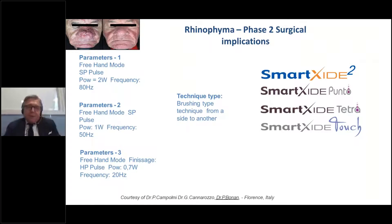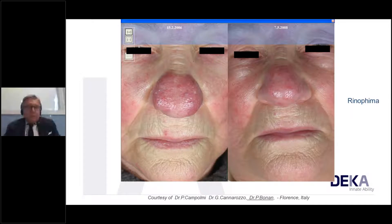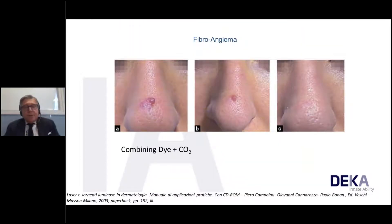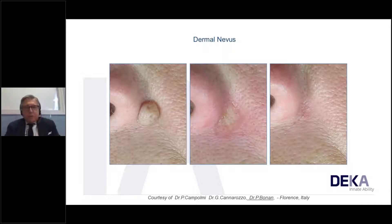Another case shows rhinophyma in women, which is very rare. We treated first with pulse dye laser and then with CO2. Another case of fibroangioma was treated with pulse dye first, then CO2 in a second phase — with perfect restoration of texture. For dermal nevi of the eyebrows, we treated with freehand SP pulse in one session, achieving good results and hair regrowth. For a dermal nevus on the lateral wing of the nose, complete vaporization was performed with results visible at 20 days to one month.